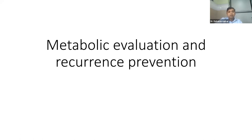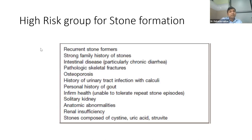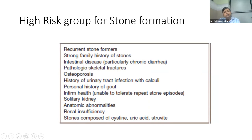Now come to the metabolic evaluation, which is very important. You need to know who are the high-risk patients requiring extensive evaluation and who need basic metabolic evaluation. High-risk patients for stone formation include: recurrent stone formers; patients with strong family history; intestinal stone disease like this patient; pathological skeletal fractures; history of recurrent UTIs; personal history of gout; solitary kidney; anatomical abnormalities; CKD patients; or stones in a complex system. If you find any of these in a patient with stone disease, they fall into the high-risk group.